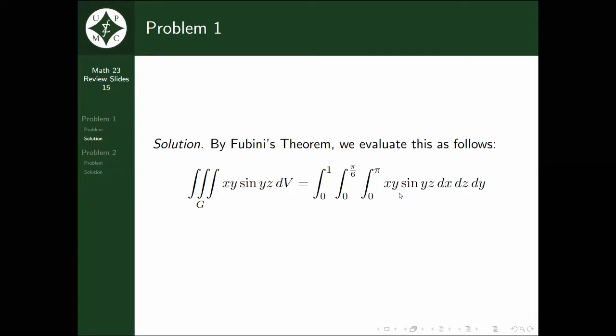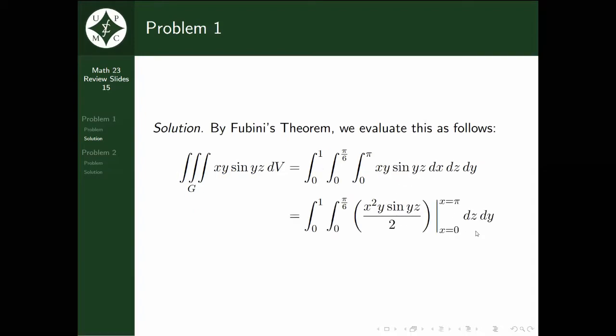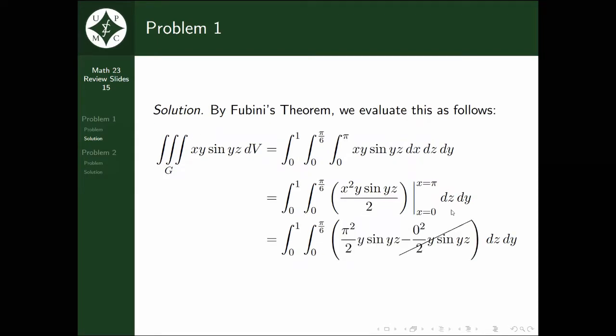Integrating with respect to x, we integrate x and put all the other variables as constants. So y sin(yz) is a constant. We integrate x, we get x²/2, and y sin(yz) remains constant. Now we evaluate at the bounds 0 and π. When x equals π, we get π²y sin(yz)/2.